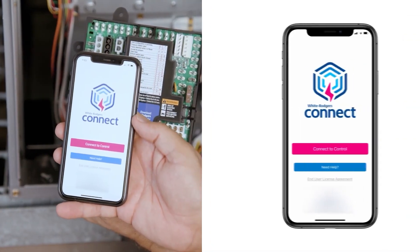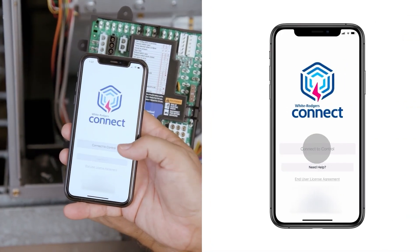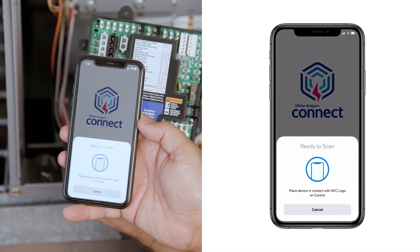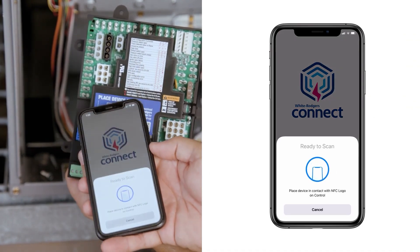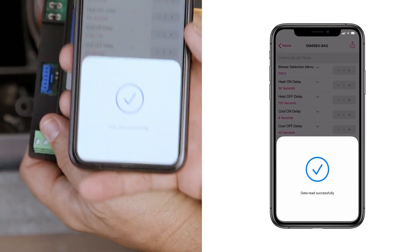Tap Connect to Control. The screen will show ready to scan. Place your mobile device on the board for a few seconds until the configuration screen appears.